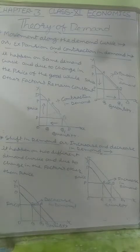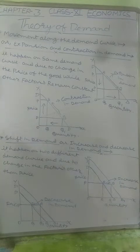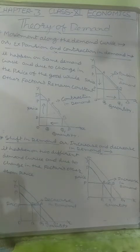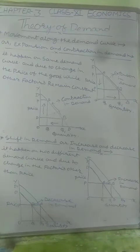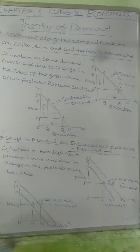Movement along the demand curve is also known as expansion and contraction in demand. It is a special case of demand, and in most examinations this question is asked for three marks. Movement along the demand curve happens on the same demand curve, and it happens only due to change in the price of the goods, while other factors remain constant.